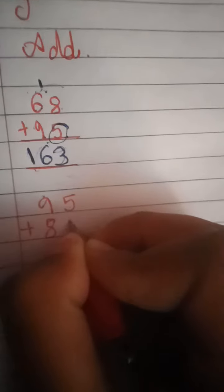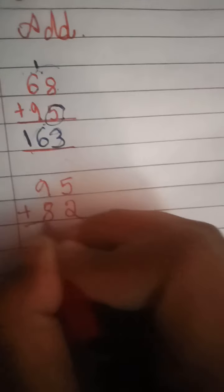Ninety five plus eighty two. What should we write here? Seven.